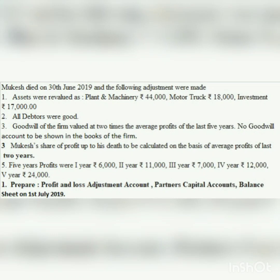Adjustment number 2: RDD was 2,000 but all debtors are good, so we will make RDD Nil. Our expected loss did not happen, which is good news, so we put it on the credit side of P&L Adjustment - credit all incomes and gains. Two effects: make RDD Nil and credit P&L adjustment.